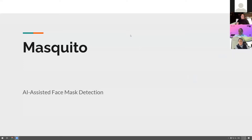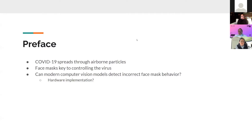This project is MISIDO, which is AI-assisted face mask detection. In the era of COVID-19, face masks are instrumental in keeping the public safer by controlling the spread of the virus. The question is: can modern computer vision models detect incorrect face mask behavior, and from that, could hardware be implemented to keep the public safer?